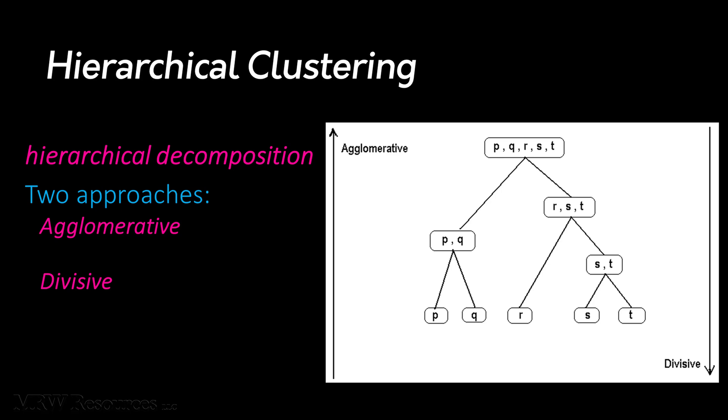Now, one of the disadvantages is once a merge or split has been made, it can't be undone. Erroneous decisions can't be corrected like they are in k-means clustering where the mean gets recalculated and points get reallocated to different clusters. Once a split or an agglomeration has been made, it sticks.